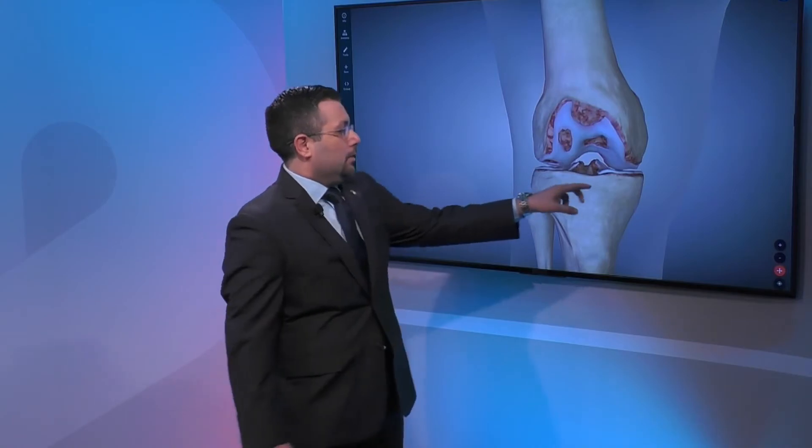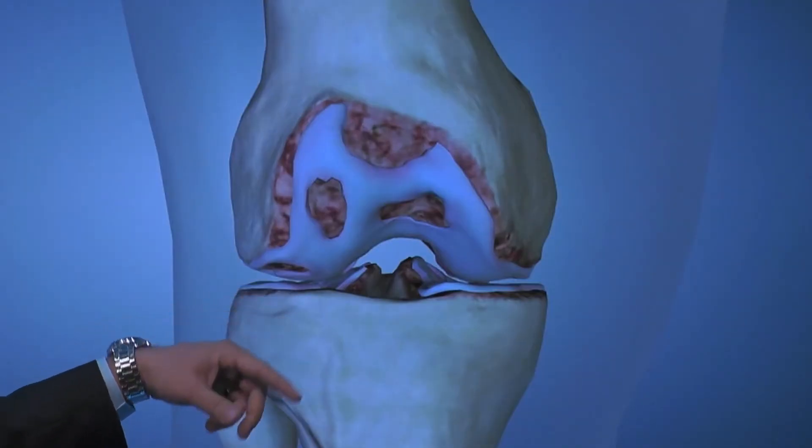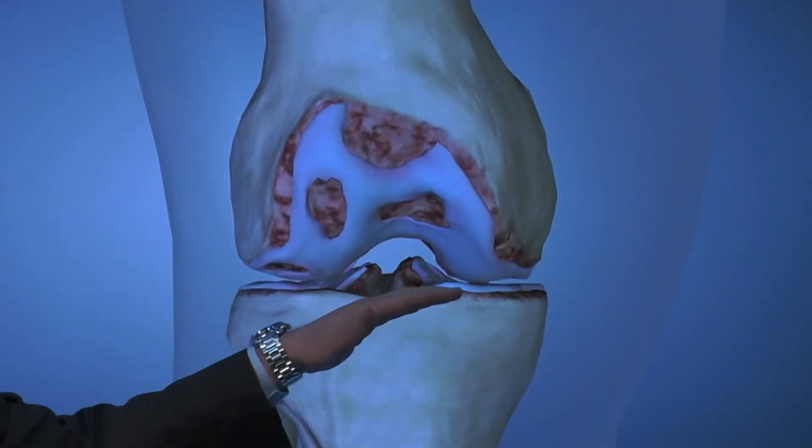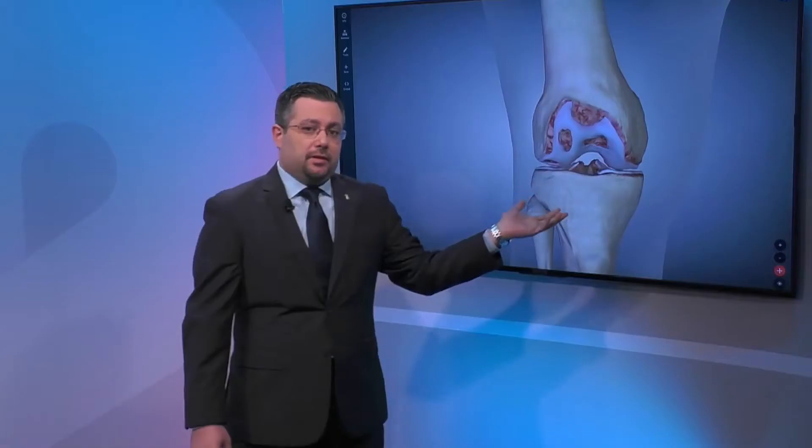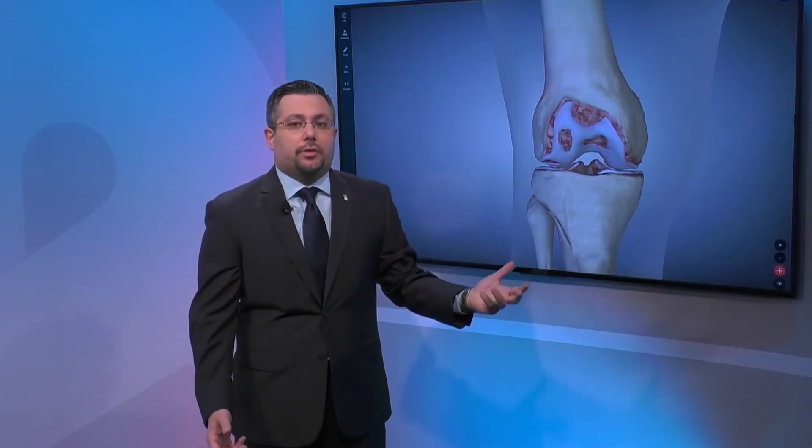One other thing you actually don't see on the model is that a lot of people have meniscus-type tears that are also present at the same time. I don't see a meniscus on that model — can you talk about that a little bit? Yeah, so the meniscus are the cushions on the side of the knee, and this model doesn't have them, but unfortunately sometimes a tear to the meniscus can give you an increased risk of having degenerative changes.